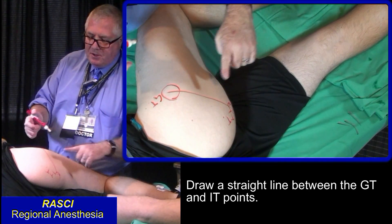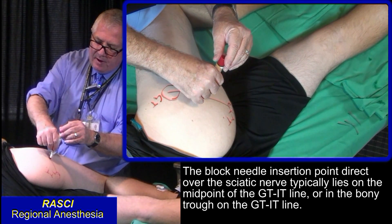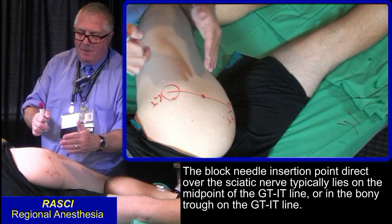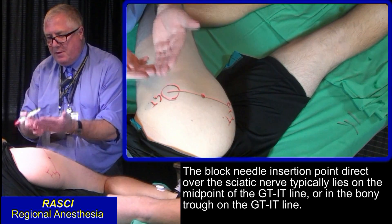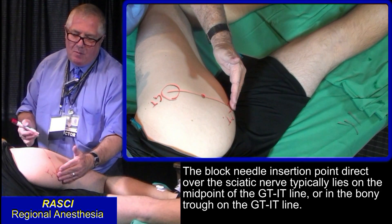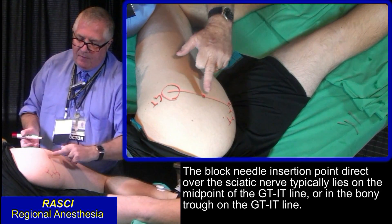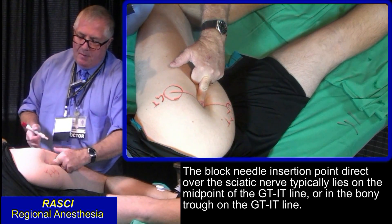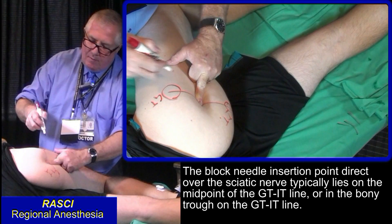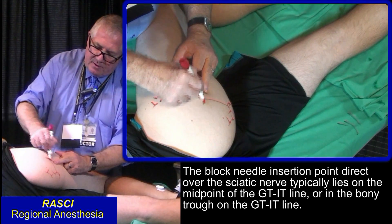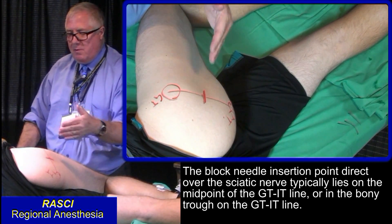For most thin patients, the midpoint is the right point to aim at the sciatic nerve. But if you have a bigger patient where the skin marking is displaced laterally by a skin saddlebag, or the marking is displaced distally by saggy skin, then just feel for the bony trough. My finger here is in a trough — there's bone to the medial side and bone to the lateral side. That is the axis, and in this case it coincides with the midpoint.